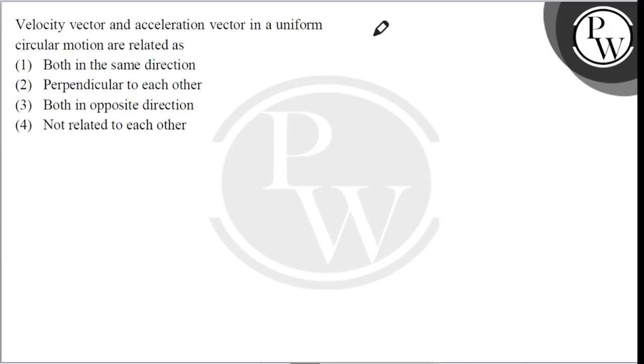Hello, let's read the question. The question says: velocity vector and acceleration vector in a uniform circular motion are related as: